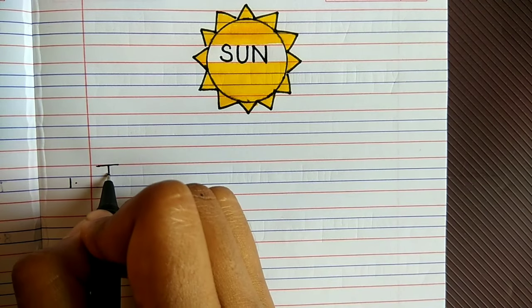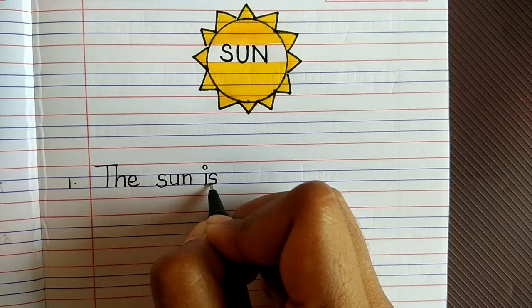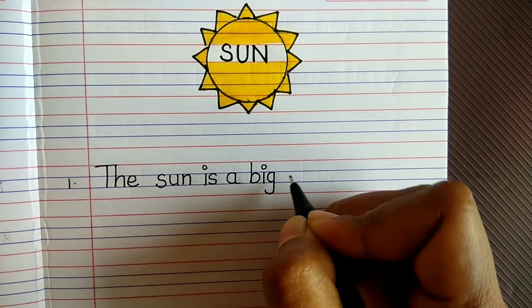Welcome back to the essay point. Today we are going to learn how to write ten lines or a short essay on the topic Sun. As the video proceeds, I'm going to read out the sentences that I write so that it will be easy for y'all to understand. So let's begin the video.